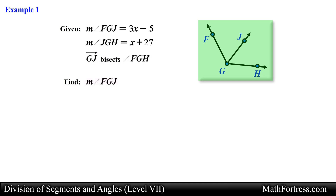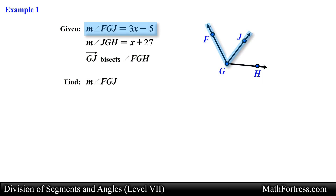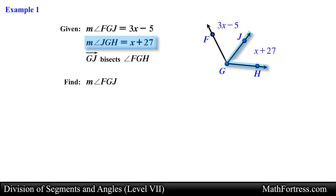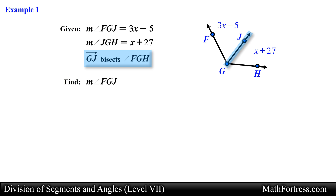Let's start by marking the diagram with the given information. We know that the measurement of angle FGJ is equal to 3x minus 5 and that the measurement of angle JGH is equal to x plus 27. We also know that ray GJ bisects angle FGH, so let's draw single arc marks for angle FGJ and angle JGH since they are congruent.